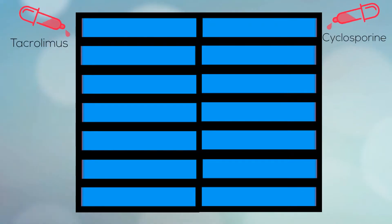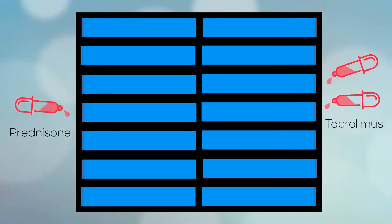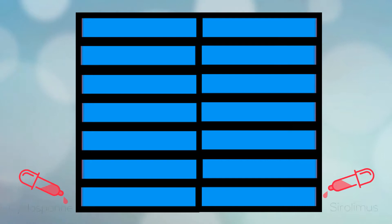Each channel will be used to test one immunosuppressant drug or one specific combination of drugs. Each immunosuppressant drug is placed at the outer end of its corresponding channel, one by one, until all channels are filled.